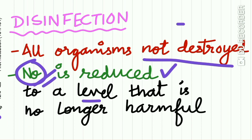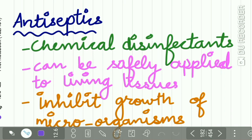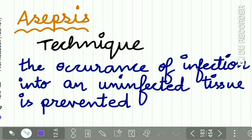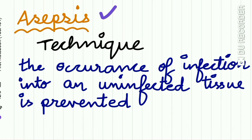What are antiseptics? Antiseptics are chemical disinfectants which can be safely applied to living tissues — to the human skin or mucous membrane — and they inhibit the growth of pathogenic microorganisms. What is asepsis? Asepsis is a technique by which the spread of infection from an infected tissue to an uninfected tissue is prevented.